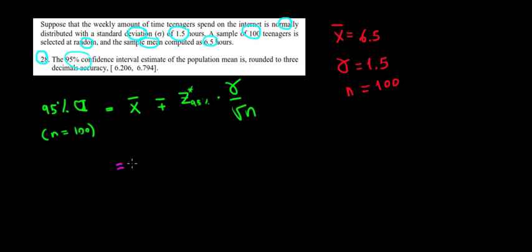The 95% confidence interval equals the sample average, 6.5, plus or minus the critical value 1.96 multiplied by the standard deviation 1.5 divided by the square root of 100.